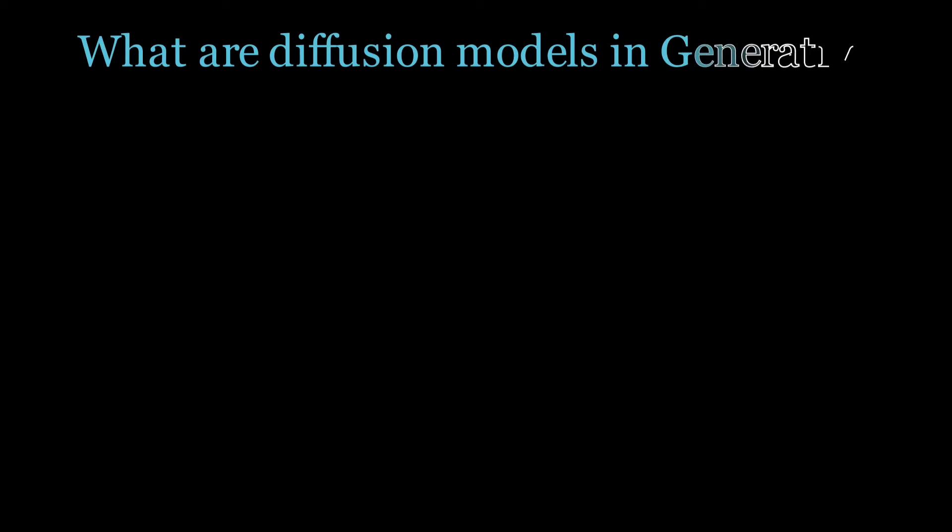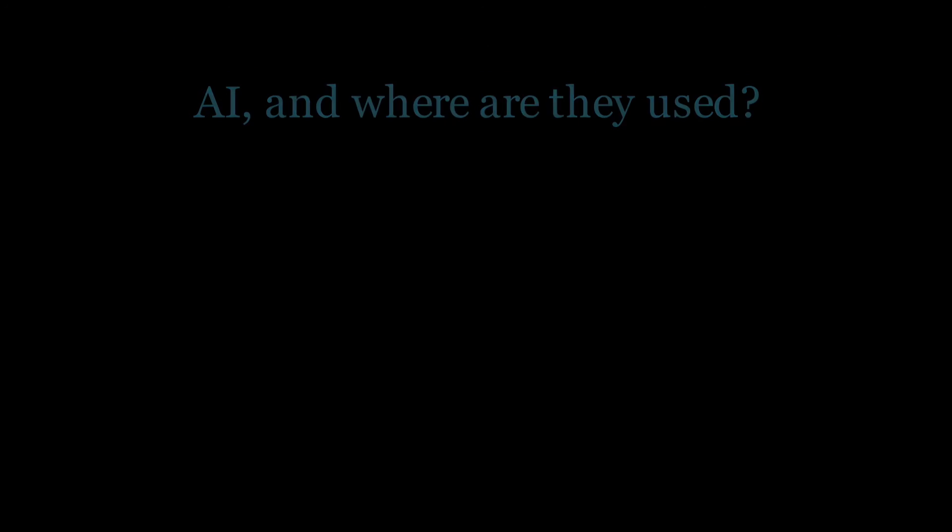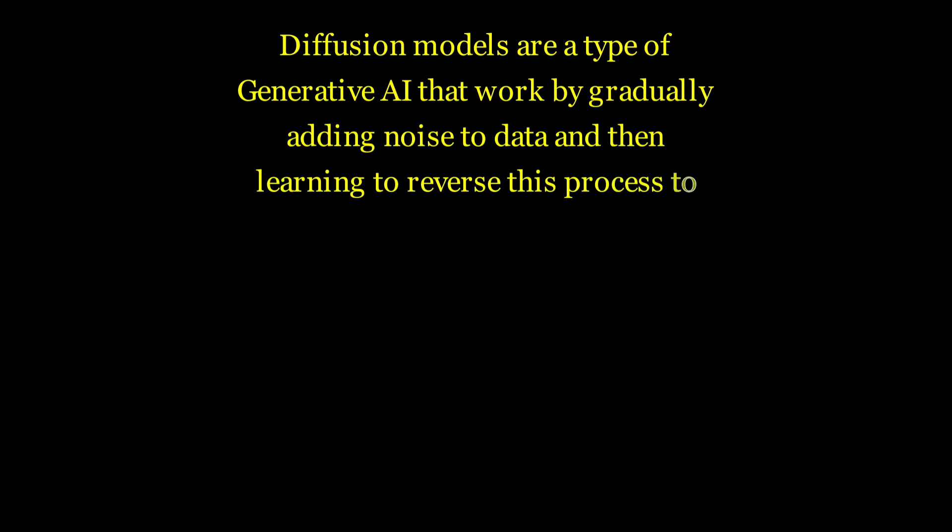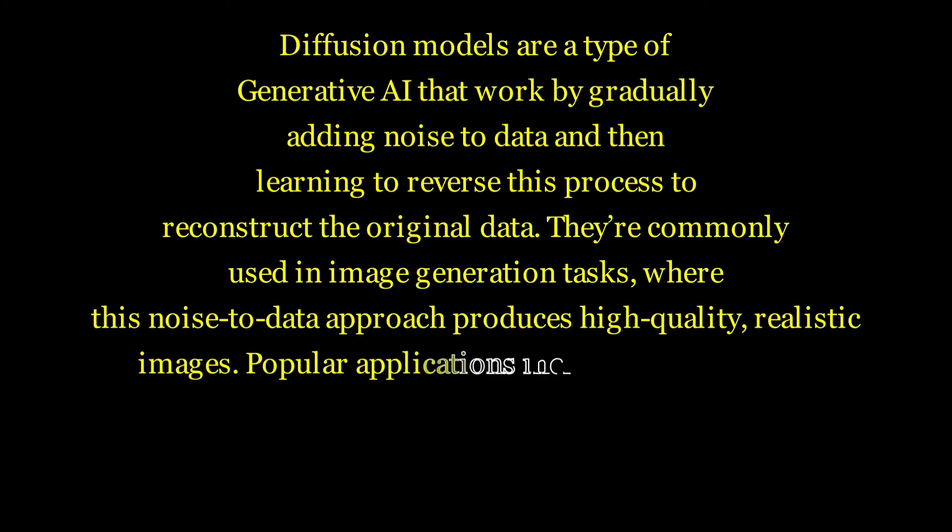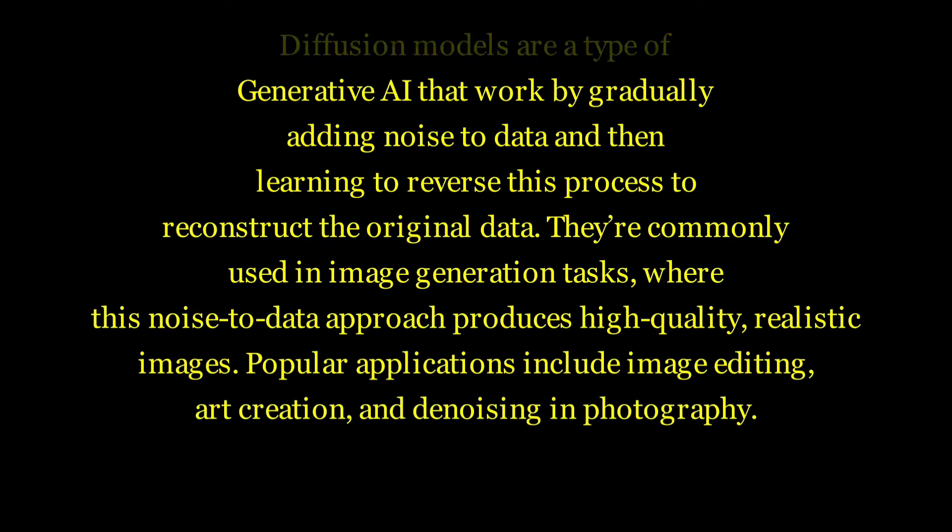What are diffusion models in generative AI and where are they used? Diffusion models are a type of generative AI that work by gradually adding noise to data and then learning to reverse this process to reconstruct the original data. They are commonly used in image generation tasks where this noise to data approach produces high quality, realistic images. Popular applications include image editing, art creation, and denoising in photography.